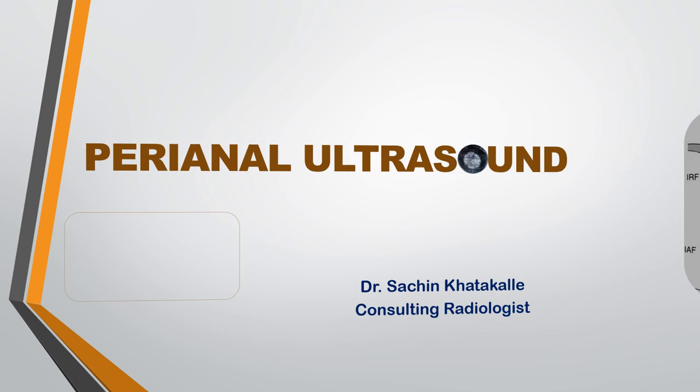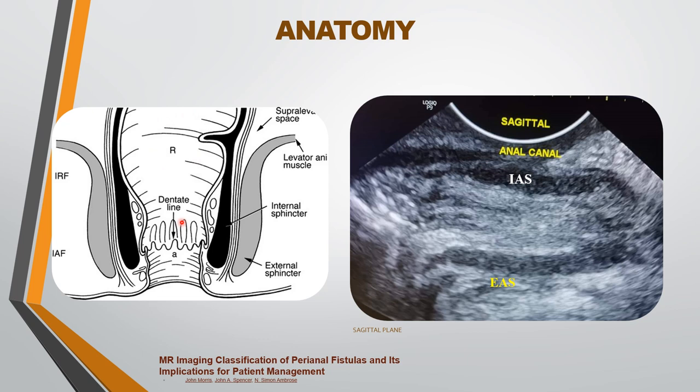We will cover the anatomy of the anal canal — the coronal image showing the rectum and the anal canal. The wall of the anal canal is composed of the internal sphincter and the external sphincter. The external sphincter continues upward as the levator ani muscle. The space between the external and internal sphincter is called the intersphincteric space. The space adjacent to the anal canal is called the ischioanal fossa. The space above the levator ani muscle is called the supra-levator space. The space located superficially around the anal opening is called the perianal space.